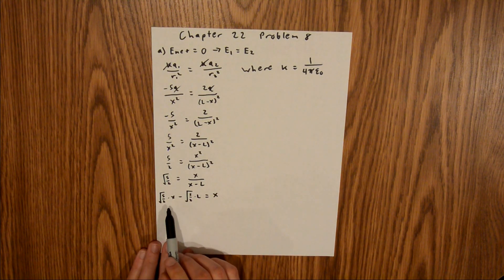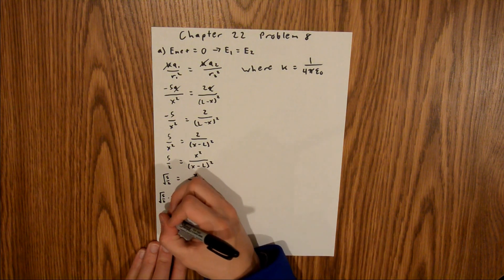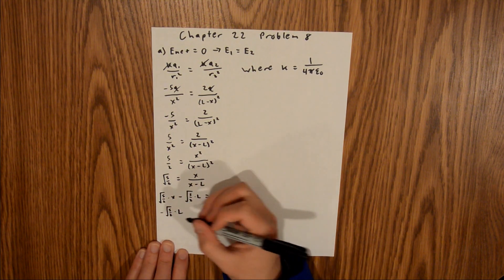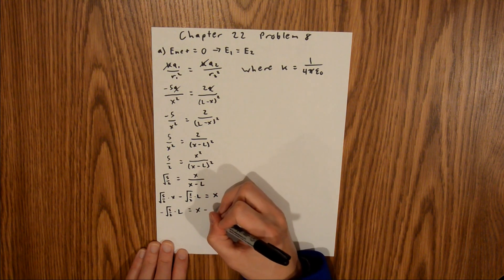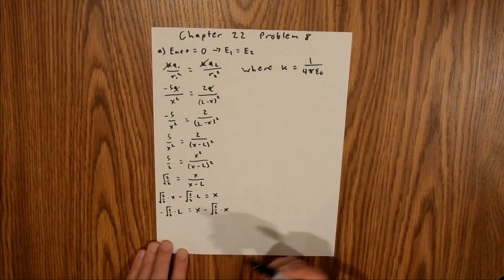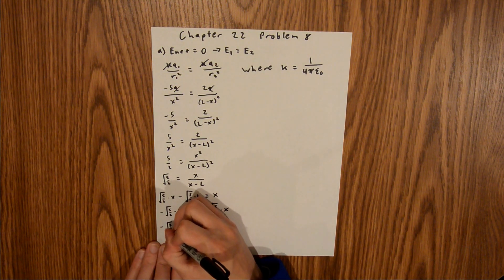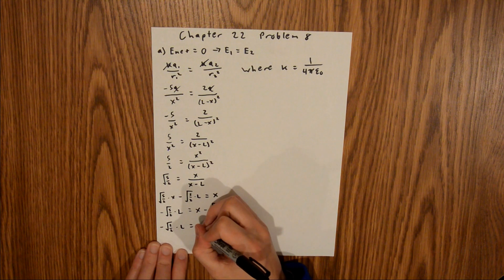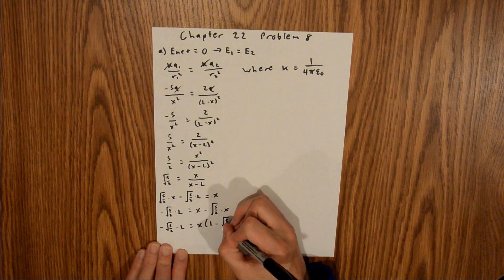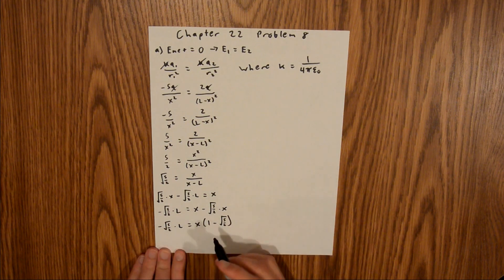And now we're going to move our square root of 5 halves x over to the other side, and so we get negative square root of 5 halves times l is equal to x minus the square root of 5 halves times x. And now we can take out an x, and we'll have negative square root of 5 halves times l is equal to x times 1 minus the square root of 5 halves.